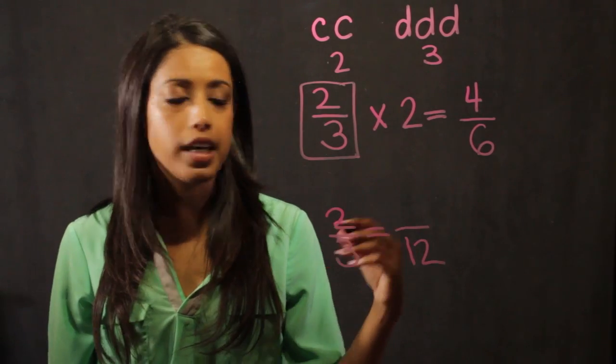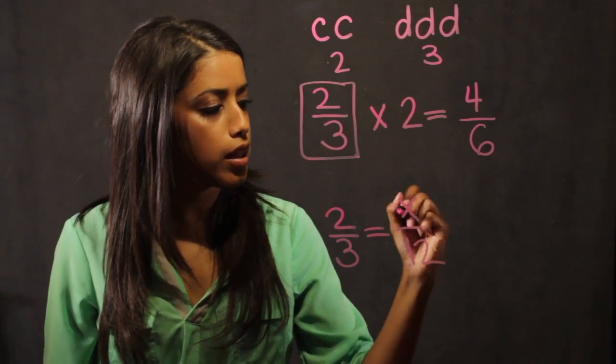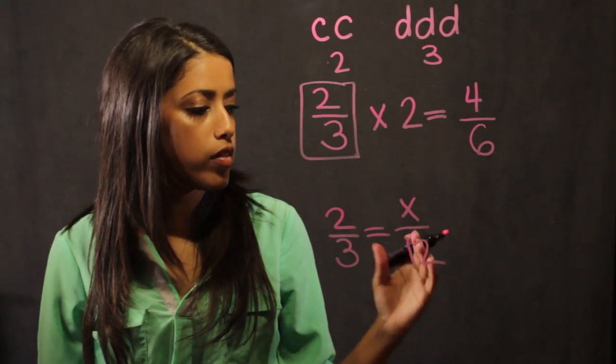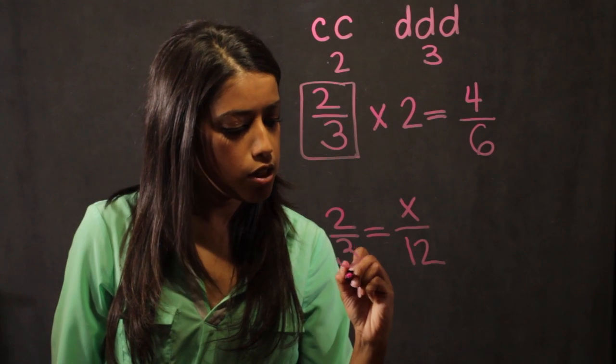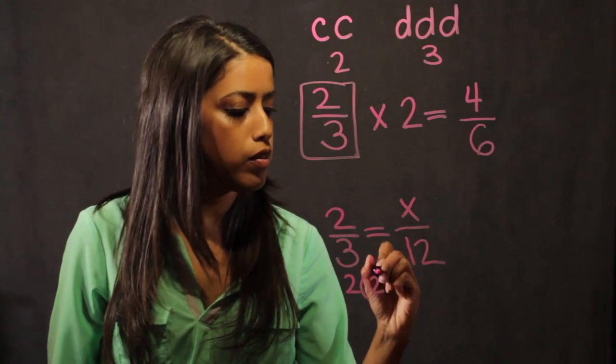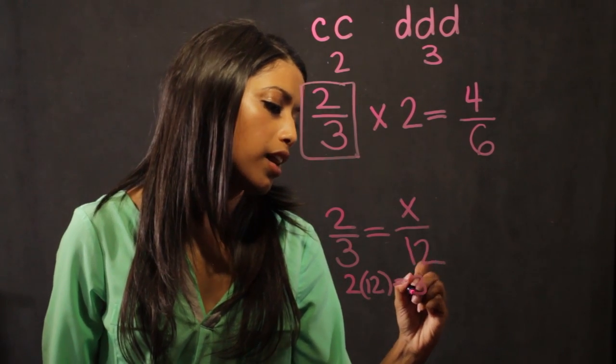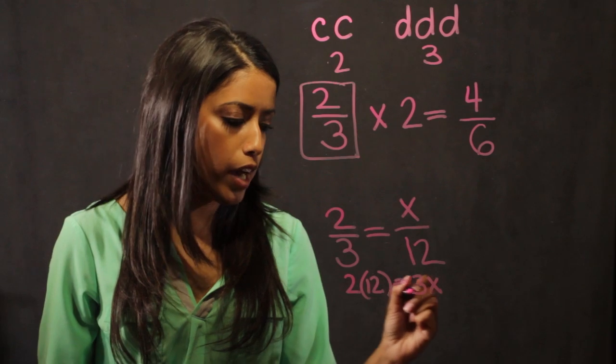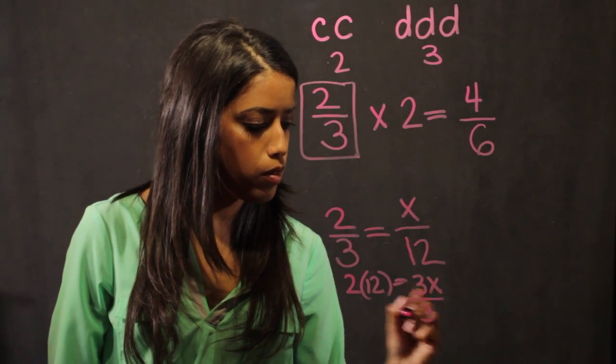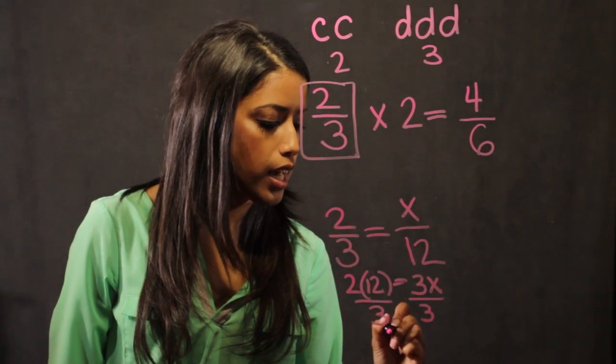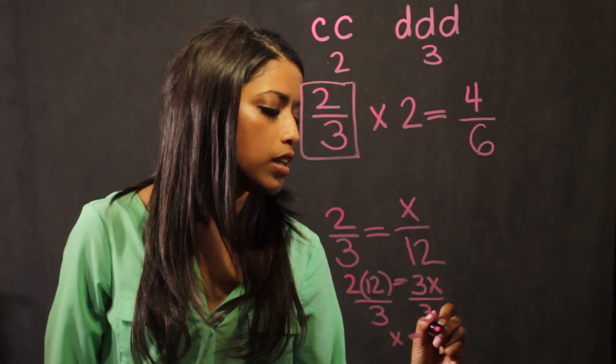I want to figure out how many cats there are. So I let X represent that number. I just solve this equation here. I cross multiply, so I get 2 times 12 is equal to 3X. I solve for X by dividing by 3, and I get X equals 8.